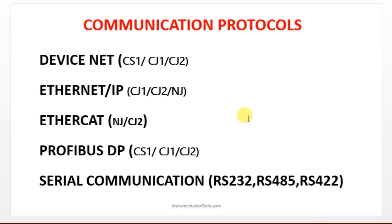Now let's look at the communication paths — the types of communication used for writing or loading programs, and for communication between the CPU and field instruments. The available communication types include DeviceNet, EtherNet/IP, EtherCAT, Profibus DP, and serial communication.